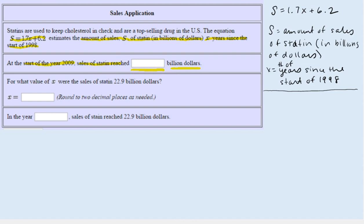Notice they're giving us one value and asking us to find the other, and that's a typical approach to most of these problems. They're telling us that the year is 2009. So that's what we're given, and our goal is to find the associated amount of sales in billions of dollars.